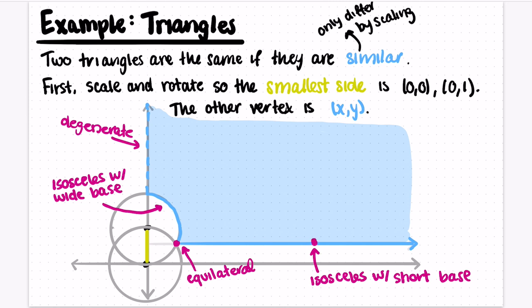Let's see what some of these look like. So the point along the bottom blue line is an isosceles triangle with a short base, then we have the equilateral triangle, and then we have isosceles triangles with wide bases. If I take a random point from out in the middle of the blue region, then we get triangles that look like this.